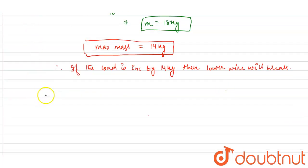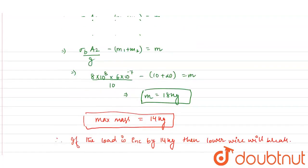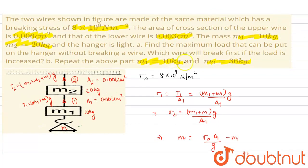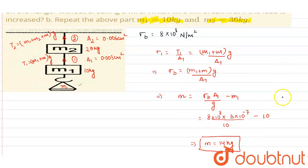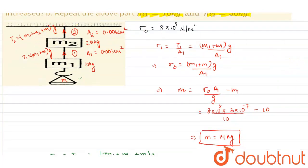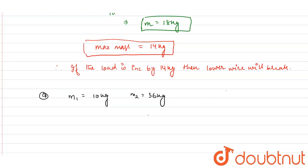In the second part, m1 = 10 kg and m2 = 36 kg. As we can see, the tension in the first wire doesn't change, so the calculation remains the same — it can sustain a mass of 14 kg. However, the stress in the second wire will change, so let us calculate the stress for the second wire: σ2 = (m1 + m2 + m) × g / A2.